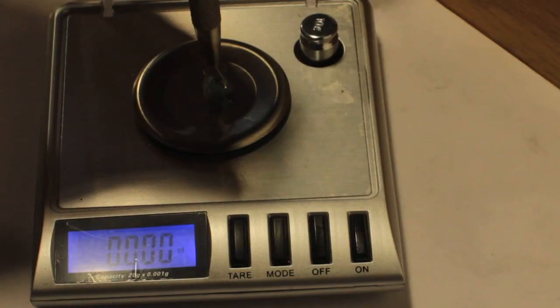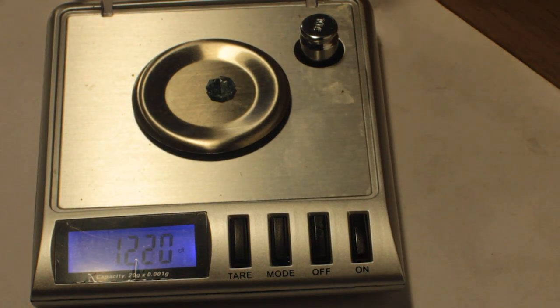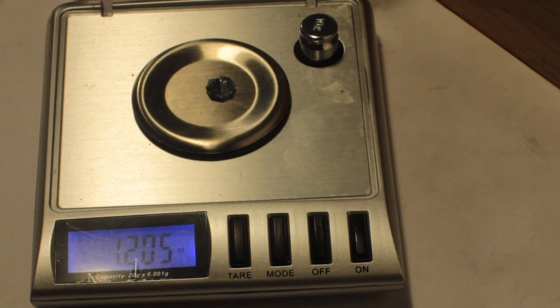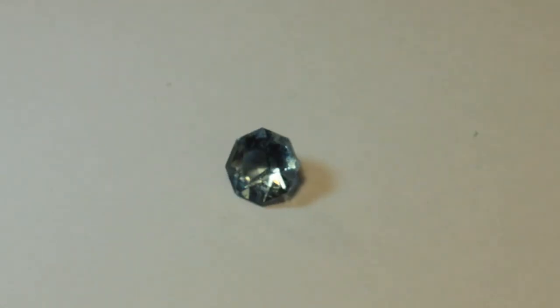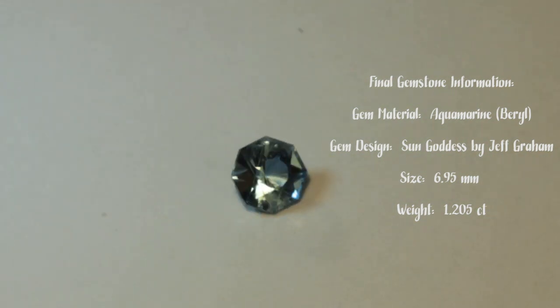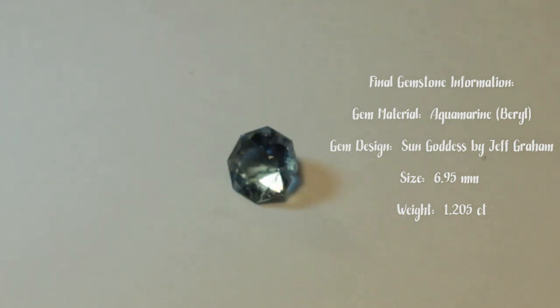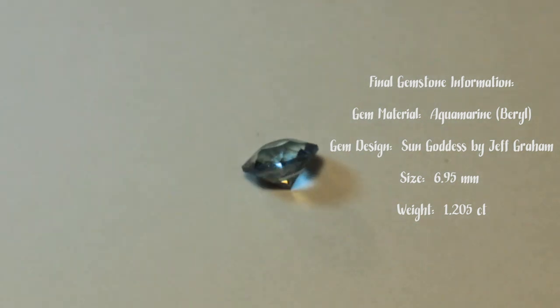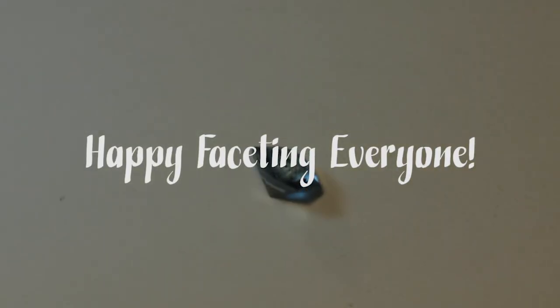Overall, the design Sun Goddess is a lot of fun to cut. Just be cautious that you don't cut the smaller facets on the upper half of the stone with your rougher dops as you're going to risk overcutting those facets. You may want to just polish them in with your final polish lap. Again, it's a fun design and it looks great. So give it a try. Happy faceting, everyone.